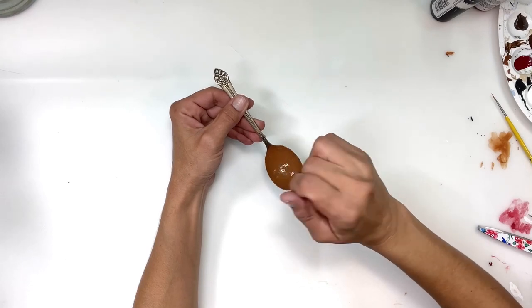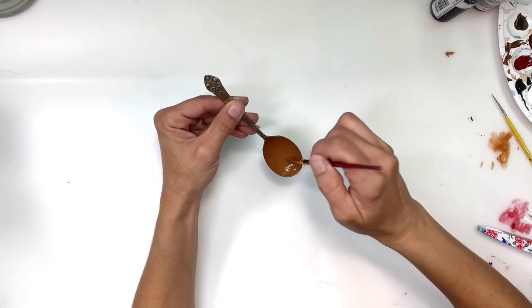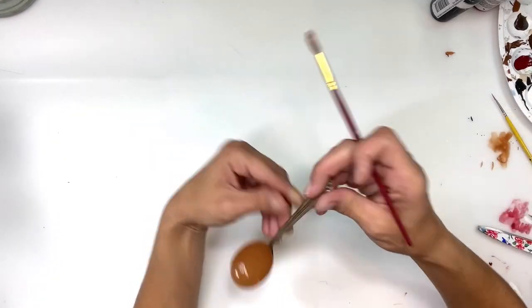First thing I'm going to do is give it a few coats of milk chocolate brown paint and let that dry in between coats. I think I did three coats on this.